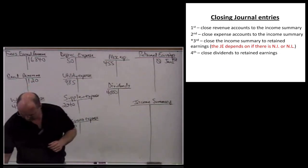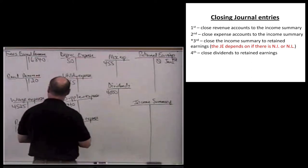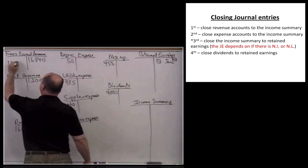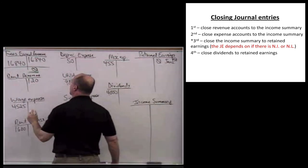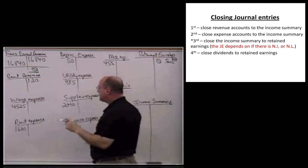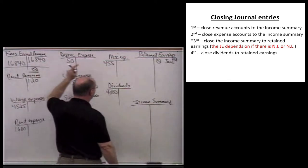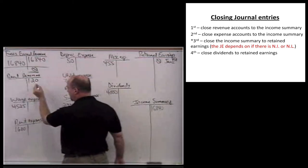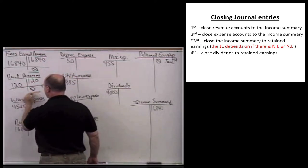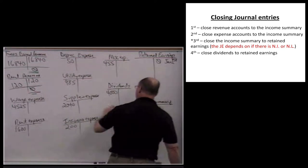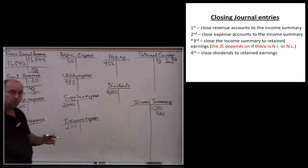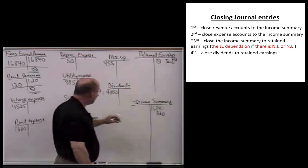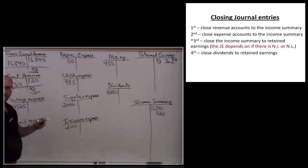On the board, here are my revenue accounts. Revenues have a normal credit balance, so to close them out I simply debit the revenues. Debits and credits in any T-account offset the numbers — so if you have $16,840 on the credit side, you need a debit to get to zero balance. So I debit fees earned and credit the income summary $16,840. Same thing with rent revenue — it's a revenue account with a normal credit balance, so debit rent revenue and credit income summary. We've just transferred the credit balances to the income summary, and now these account balances are back to zero.